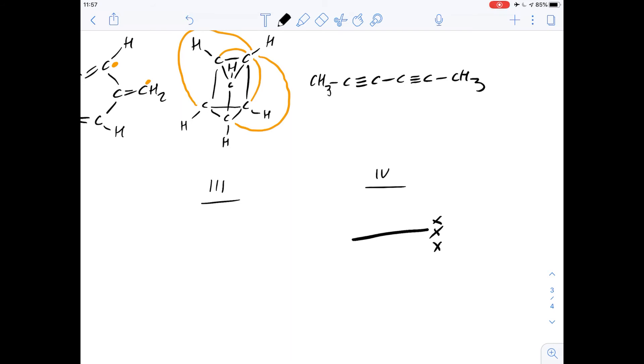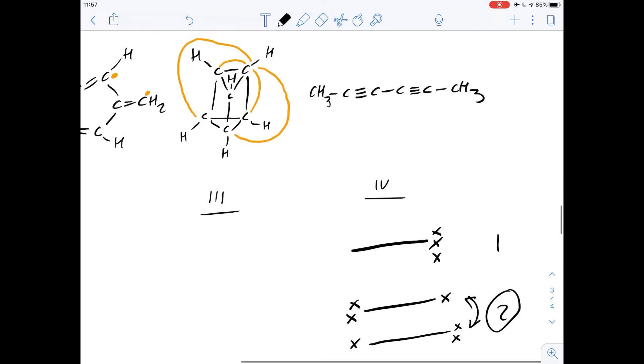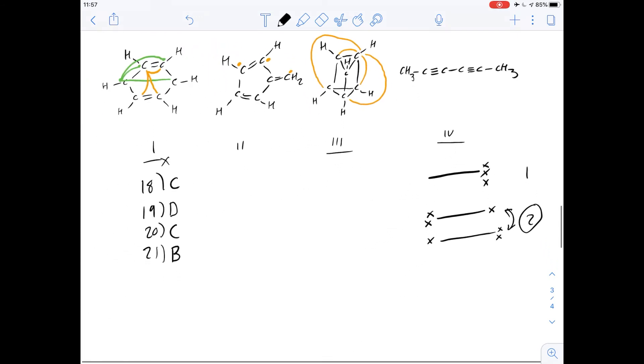We could put them all on one end like this and leave the other end just with hydrogen, or put one on one end and two on the other. Equally we could flip it around and do two on one end and one on the other, but these two are the same. So there's only going to be two different isomers of 4 for a tri-substituted molecule. The answer for number 22 is B.